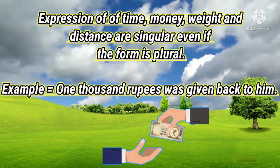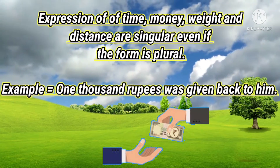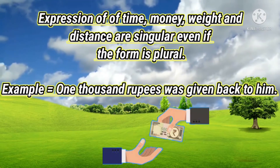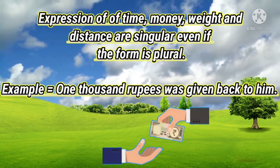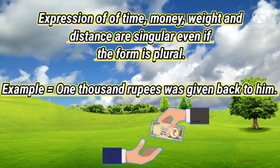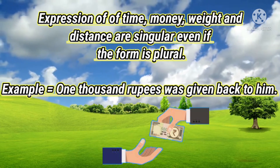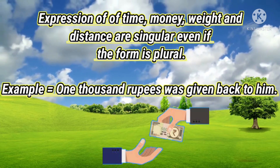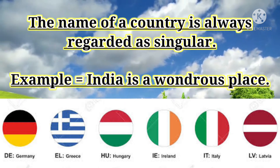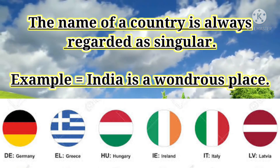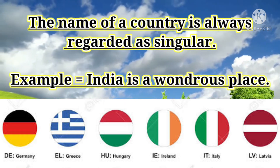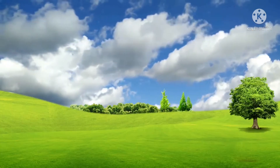Expressions of time, money, weight, and distance are singular even if the form is plural. Example: one thousand rupees was given back to him. The name of a country is always regarded as singular. Example: India is a wondrous place.